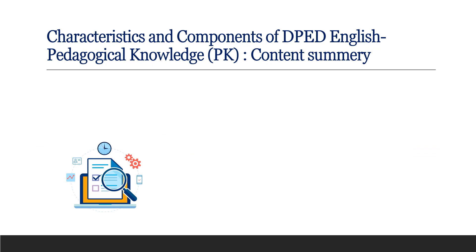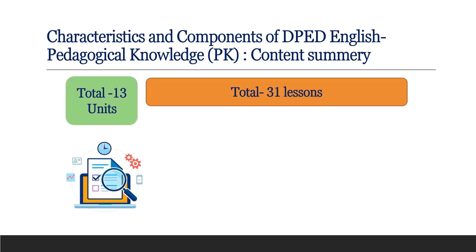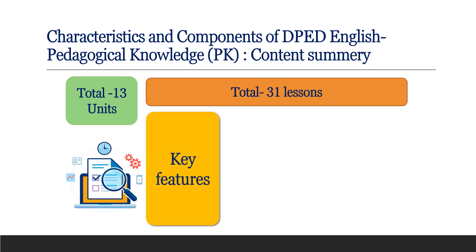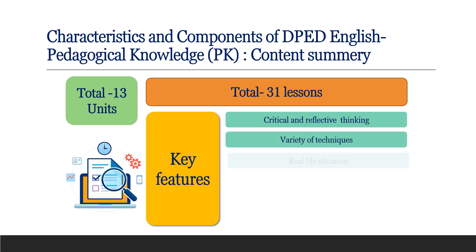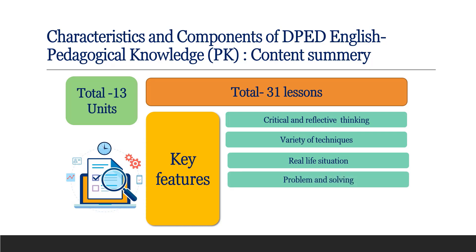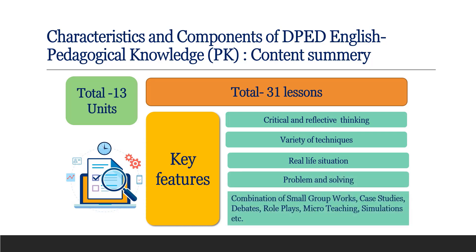Here is the content summary of DPA English Pedagogical Knowledge. We have a total of 13 units and 31 lessons. The key features of these sections are: critical and reflective thinking; variety of techniques; real life situation problems and problem solving; combination of small group works; case studies; debates; role plays; micro teaching; simulations; and more.